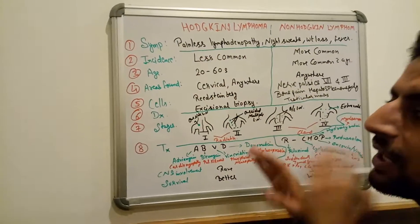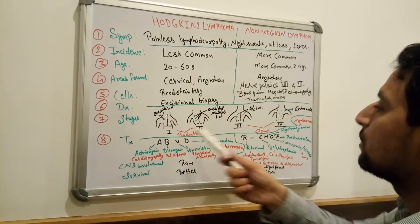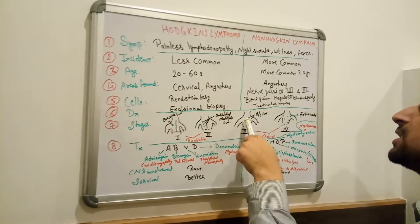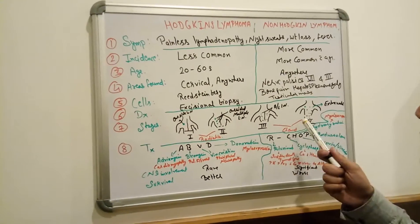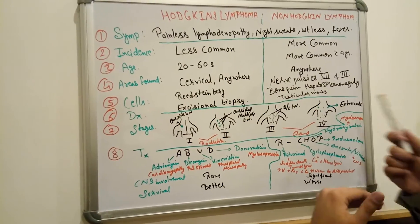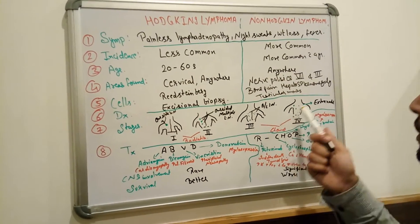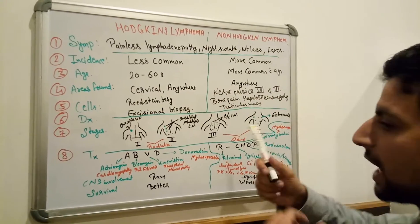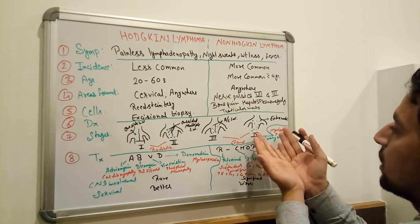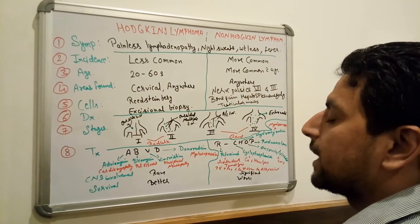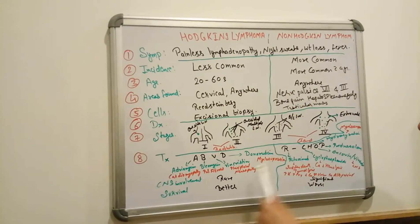But in third stage above the diaphragm bilateral lymph nodes are involved. This is known as third stage. But in fourth stage there are extra nodes like in spleen, in liver, or in testis or in inguinal region. Any lymph nodes we found on extranodal sites. This is known as fourth stage. So let's know the treatment. How to treat Hodgkin and non-Hodgkin lymphoma.